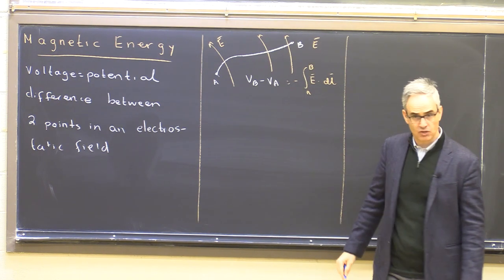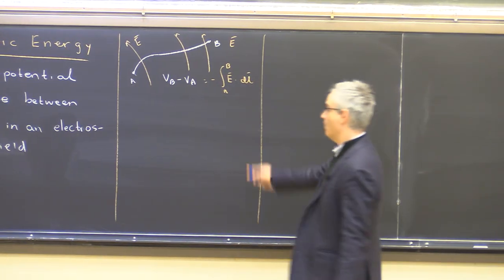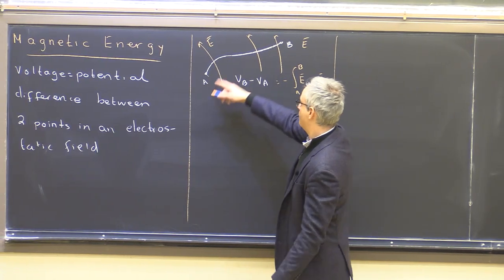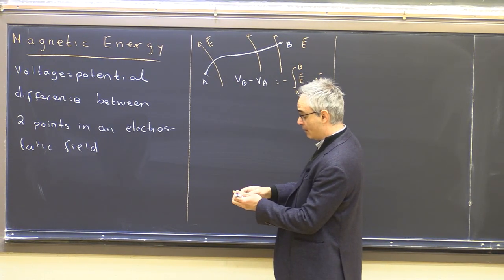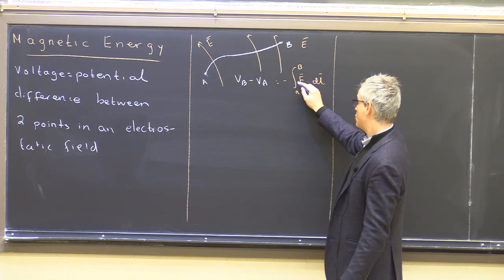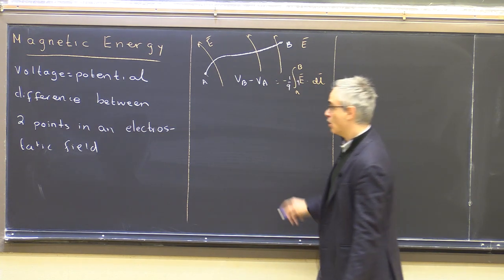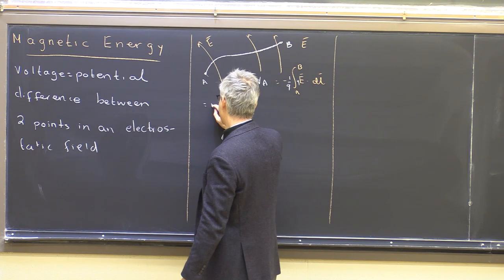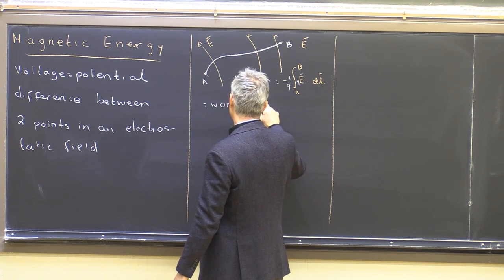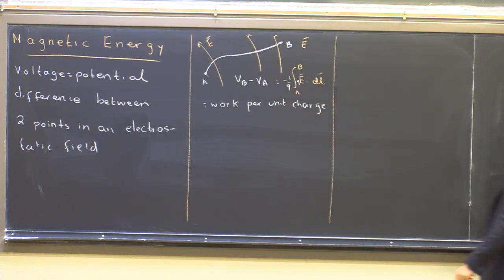This formula has a physical interpretation: voltage is work done per unit charge to move a charge from point A to point B against the force of the field. You can imagine a charge q multiplying and dividing this quantity. This work is stored as energy in the electrostatic field itself — that is what we had seen back then.